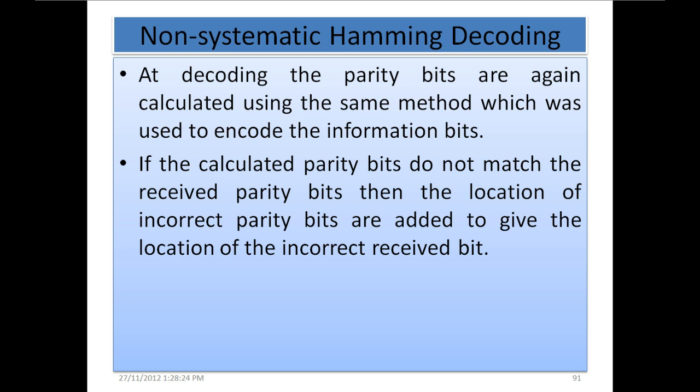Non-systematic Hamming decoding: At decoding, the parity bits are again calculated using the same method which was used to encode the information bits. If the calculated parity bits do not match the received parity bits, then the location of incorrect parity bits are added to give the location of the incorrect received bit.